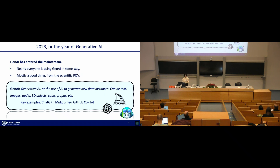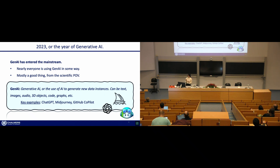Nearly everyone is using Gen AI in some way, and we have many discussions now ongoing about how this is affecting education. From the scientific point of view, this is mostly a good thing, since it helps us push a lot of our research forward — that's a lot of what the rest of this talk is going to be about, how Gen AI is helping us progress scientifically. I did note that this is only mostly a good thing, since the recent advances have also made the existential AI threat dialogue enter the mainstream, making a lot of people fearful of AI.